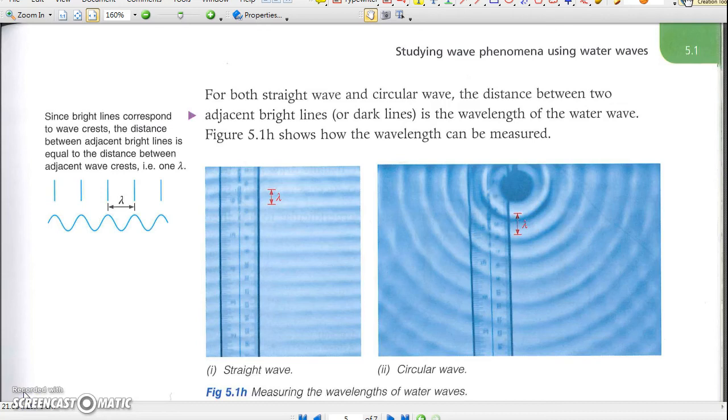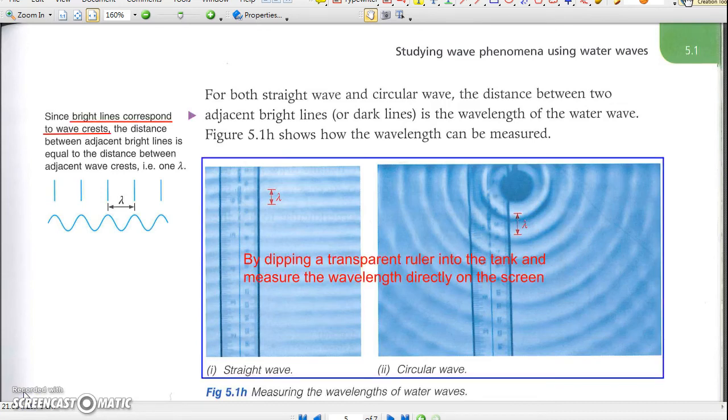In a ripple tank, we may measure the wavelength simply by dipping a transparent ruler into the tank and measuring the wavelength directly from the image projected on the screen, as shown in Figure 5.1h.